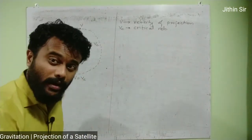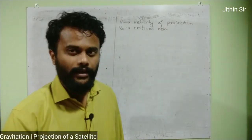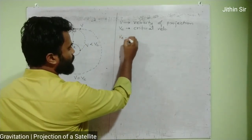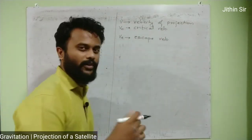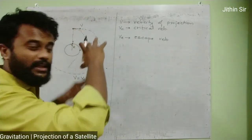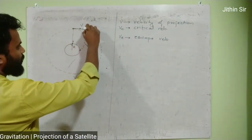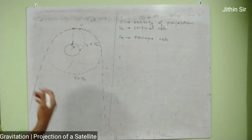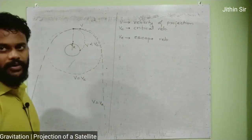If our velocity is greater than critical velocity, up to a certain limit, there is no tension — it stays in orbit. That limit is called escape velocity. Escape velocity is that velocity with which, if we project the satellite, it escapes from earth's gravitational field and goes away. So if velocity of projection equals escape velocity, the satellite goes forward and away. This happens when the velocity of projection is equal to escape velocity.